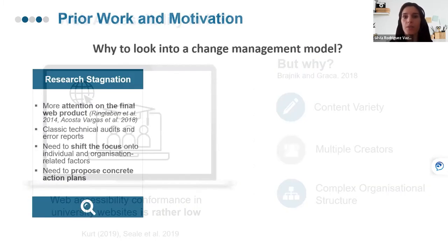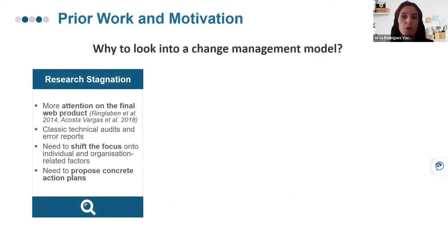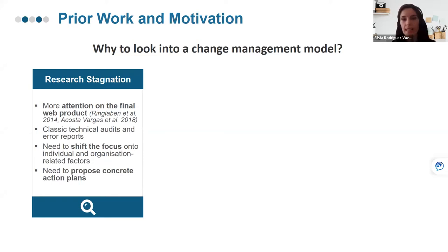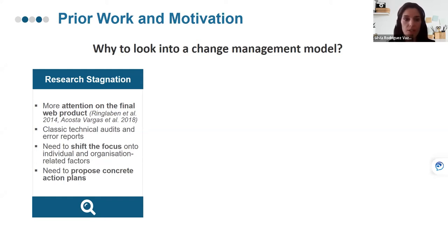So why look into a change management model to investigate web accessibility of university websites? For three main reasons. First, we have observed stagnation in research approaches: over the last 15 years, we have placed more attention on the final web product, creating classical technical audits and error reports. It would be ideal to shift focus onto individual and organization-related factors and propose more concrete action plans.